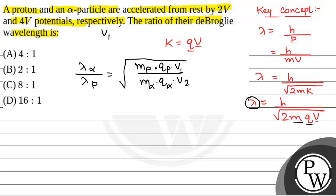V1 is given as proton is accelerated by 2 volt potential and V2, alpha particle is accelerated by 4 volt potential. So this will be equal to, if mass of proton is 1 and charge on proton is 1 unit and V1 is 2 volt...